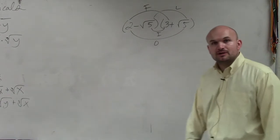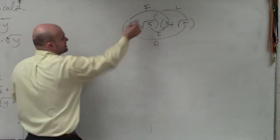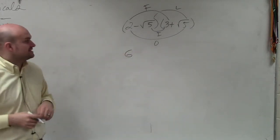So what we're going to do is multiply each of these terms and then combine them. The first term is 2 times 3, which is just going to be 6.